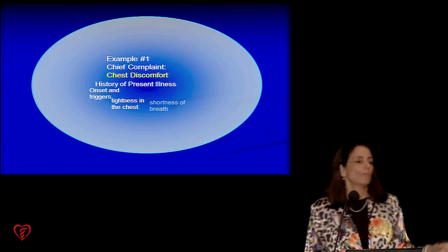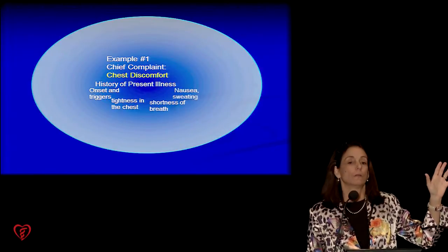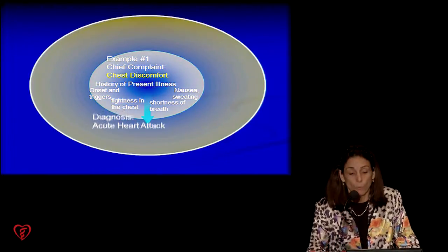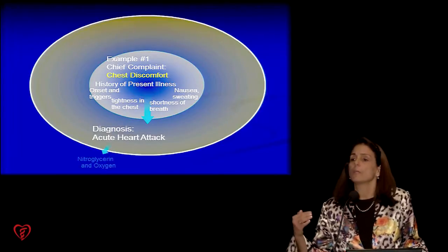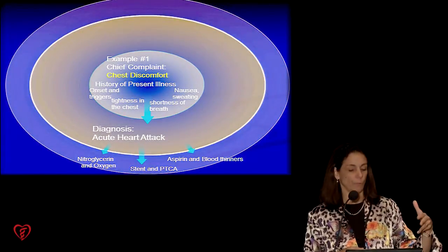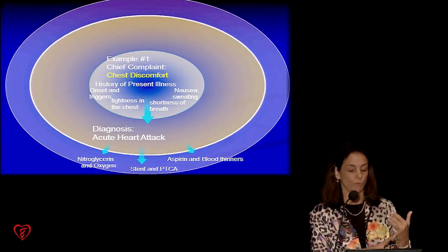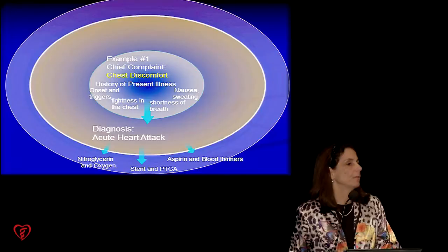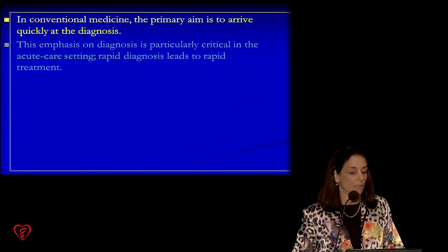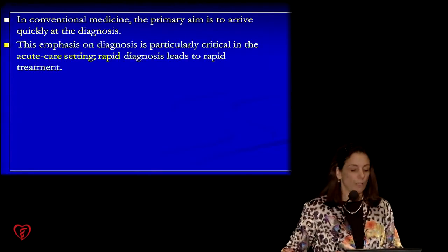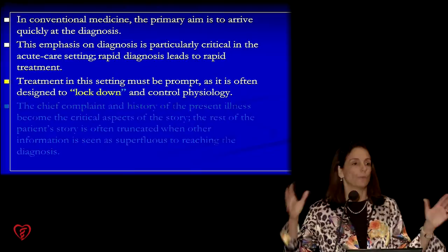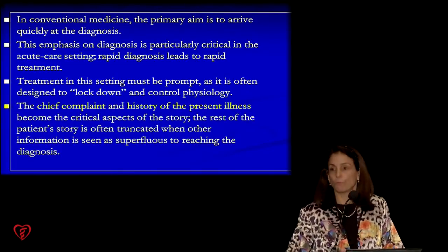All of us were trained the same way. What's our first question? Chief complaint. Right away, that implies you're coming to me sick — you're broken, something's not right. The good news about the acute care model is it gets us right to the diagnosis and treatment. We go: chief complaint, history, diagnosis, and treatment. Somebody comes in with chest pain, we want to make the diagnosis of heart attack, get the aspirin, nitro, stent, angioplasty, and everything in place. We arrive at the diagnosis very quickly, leading to rapid treatment.